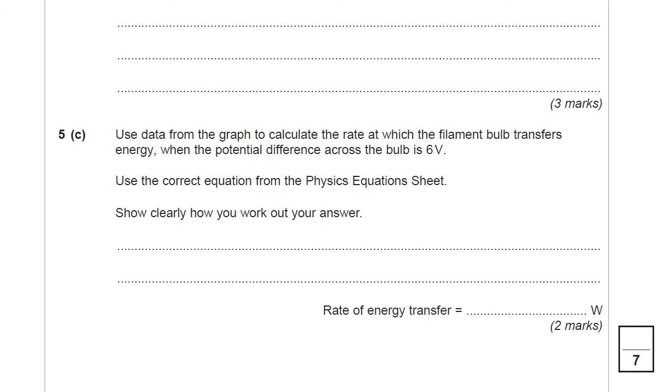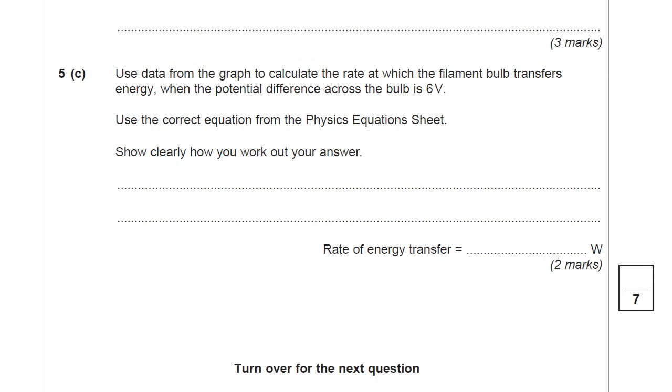The next part asks you to use a graph and to perform a calculation. Let's have a little read. Use the data from the graph to calculate the rate at which the filament bulb transfers energy when the potential difference across the bulb is 6 volts. So we've got to use the graph to get some information at 6 volts and use the correct equation from the physics equation sheet. Now, I'm going to give you a bit of a clue here because we don't often call this quantity the rate at which the filament bulb transfers energy. The rate at which the filament bulb transfers energy is the power. So when you go to your equation sheet in a moment, look for something that links power, potential difference, and what is the other thing that you can get from the graph. Have a little go at that, and then come back.